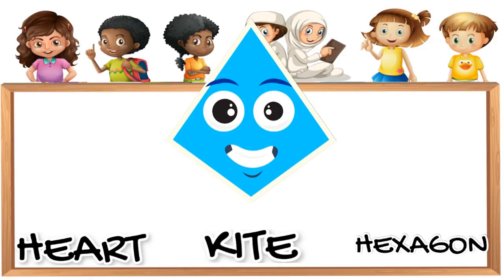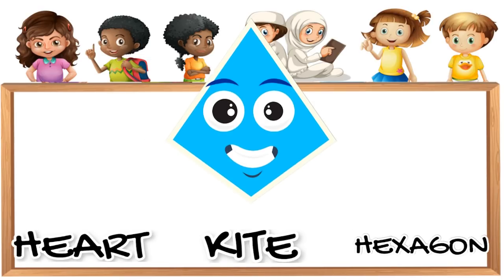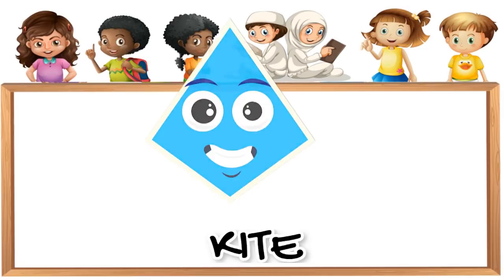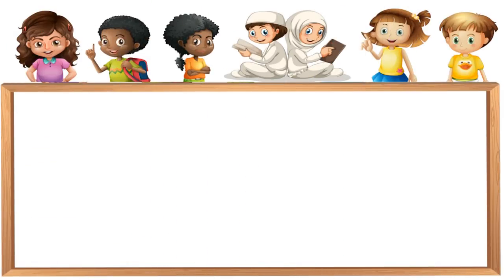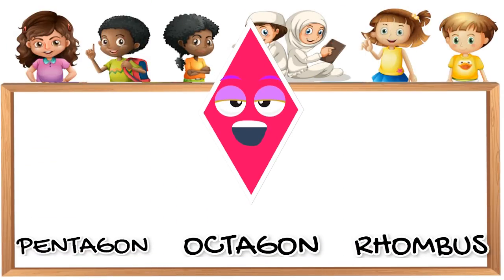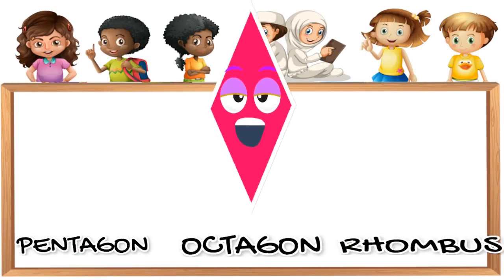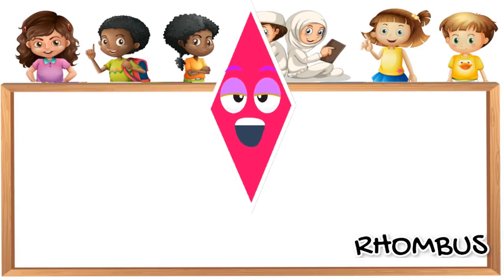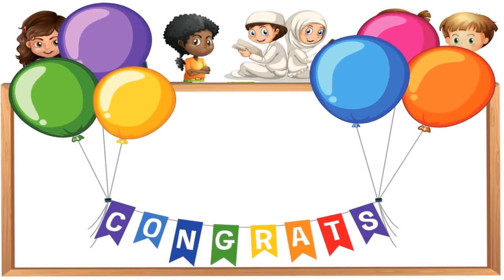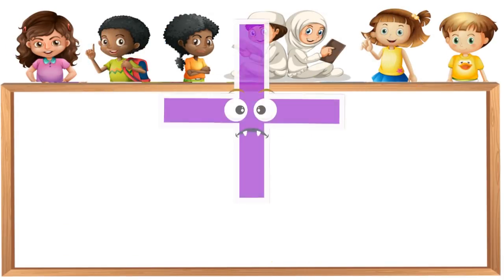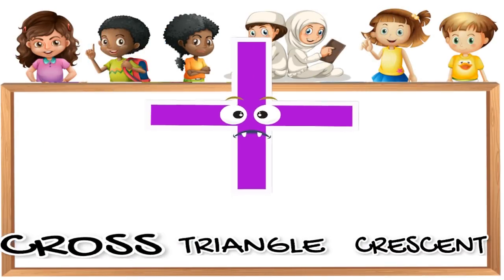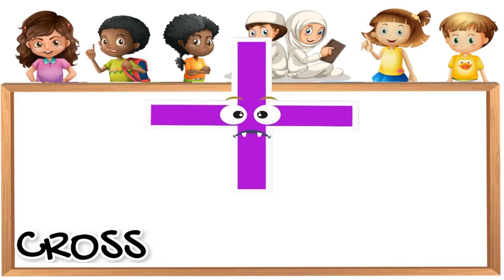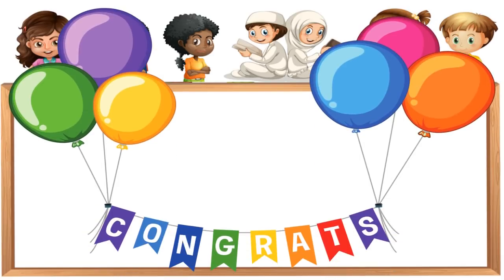What shape is it? Kite. Very good! Hooray! What shape is it? Rhombus. Awesome! Hooray! What shape is it? Cross. Correct! Hooray!